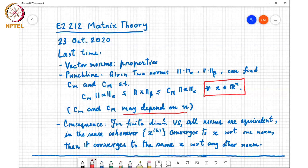The consequence of this is that over finite dimensional vector spaces, all norms are equivalent in the sense that whenever x_k converges to x with respect to the alpha norm, then it converges to the same x with respect to any other norm.